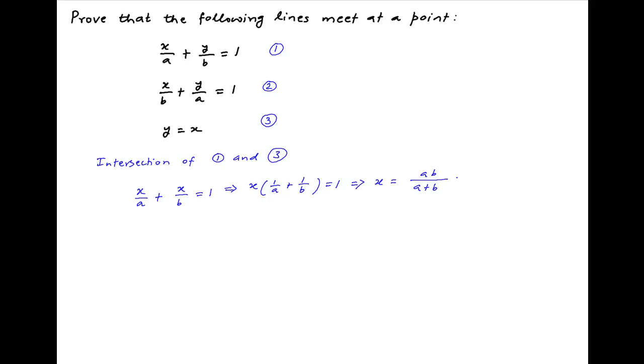Using the third equation, this is also the value of y at the point of intersection. Therefore, the coordinates of the point of intersection of lines 1 and 3 are ab/(a+b), ab/(a+b).